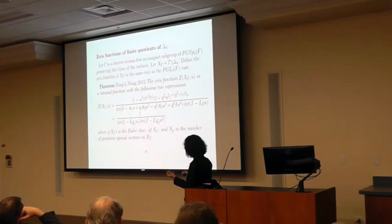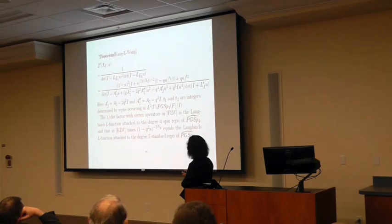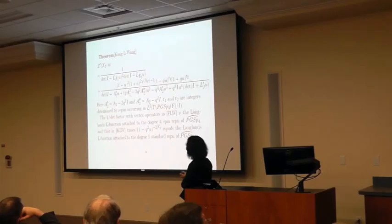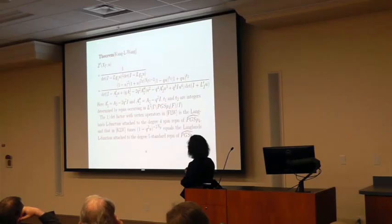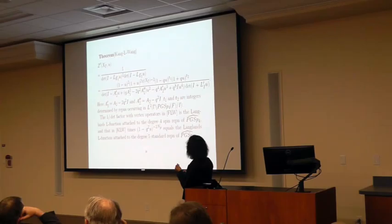There is another element L-function attached to the so-called standard representation of GSp₄, which has degree 5. It turns out that this L-function also appears as a zeta. In that case, we count cycles in a different way: for cycles of type 2 we take length 1, and for cycles of type 1 we count each one twice. Doing this, the L-function associated to the standard representation also shows up. As you can see, the numerator becomes more complicated with one extra factor. But in any case, this is an explicit closed-form expression. I end my talk here.